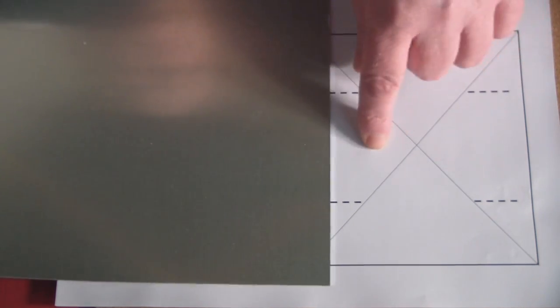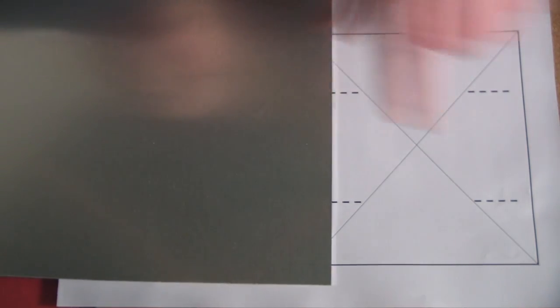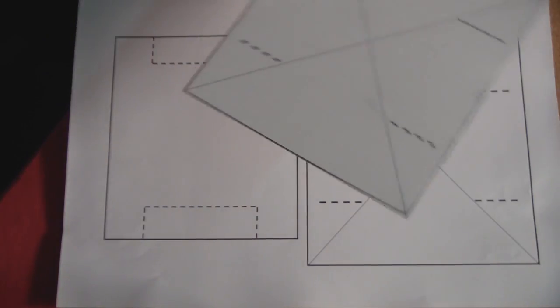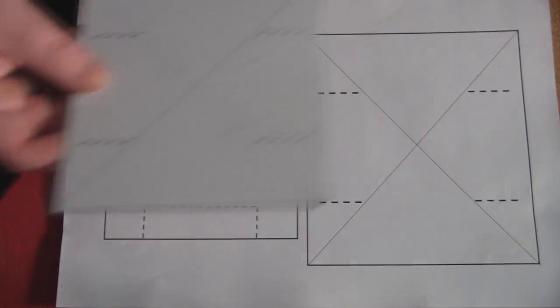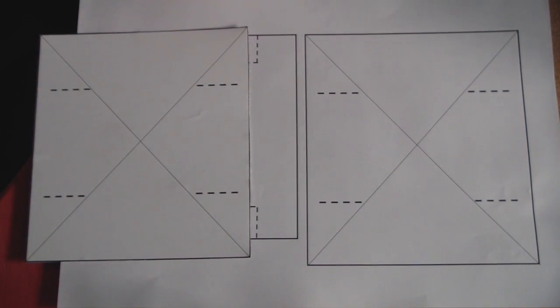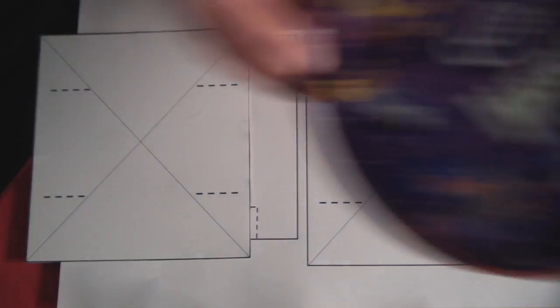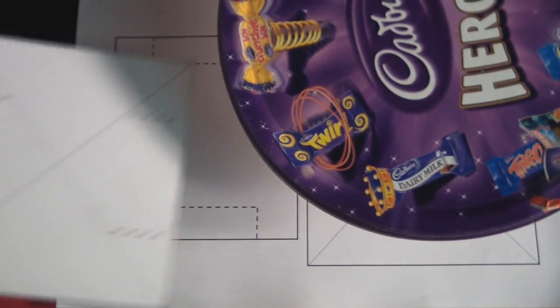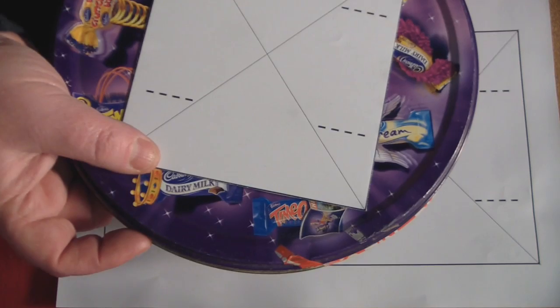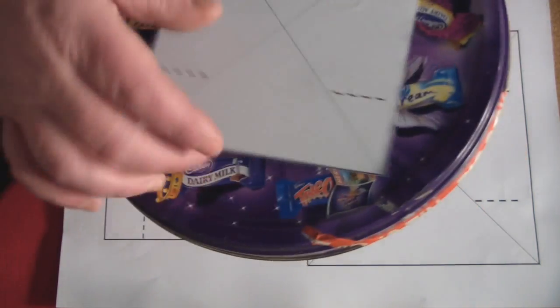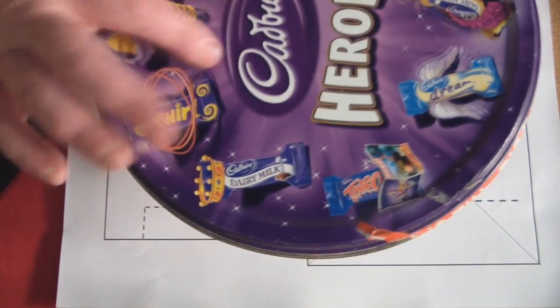For this back reflector here, I've used some aluminum sheeting and what I've done is stuck that down onto here and then cut around it. If you haven't got anything like the aluminum sheeting, then you can use things like old sweet tins, cookie tins. You can just stick it down and then cut around it and then you can paint over this afterwards.